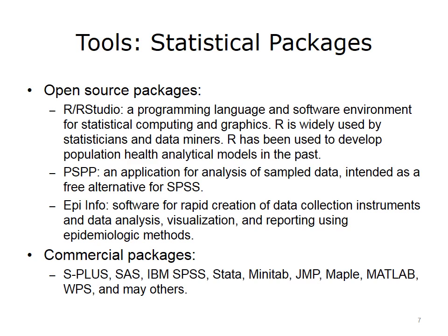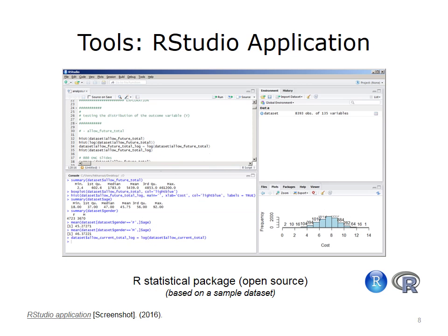Statistical packages are commonly used to develop predictive models in population health analytics. Open source statistical packages include R, PSPP, and EpiInfo. Commercial packages include S+, SAS, IBM SPSS, STATA, MINITAB, JMP, MAPLE, MATLAB, WPS, and many others. Note that none of these packages is specifically designed for population health analytics, but most can be easily adopted for population health predictive models. This figure shows a screenshot of RStudio using the R environment to analyze a sample population dataset, providing panels for R code entry, command line output, data objects, and plots and diagrams.